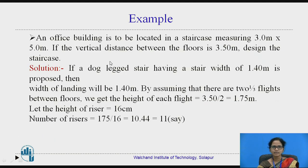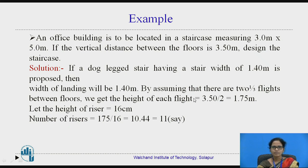Here is an example. An office building is to have a staircase measuring 3 meters by 5 meters. If the vertical distance between the floors is 3.5 meters, design the staircase. The solution: a dogleg stair having a stair width of 1.4 meters is proposed, so the landing width will also be 1.4 meters. Assuming two flights between floors, the height of each flight is 3.5 divided by 2, which gives 1.75 meters.